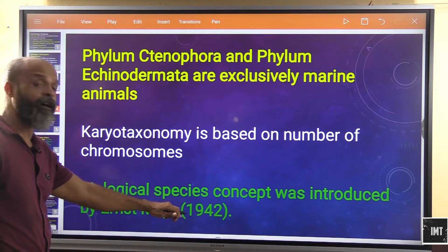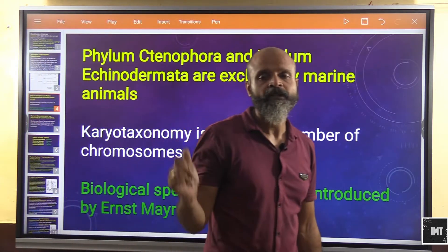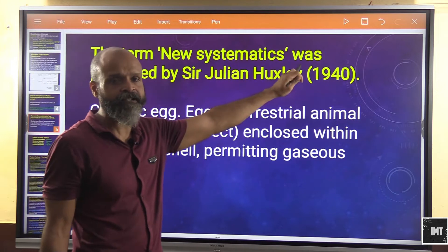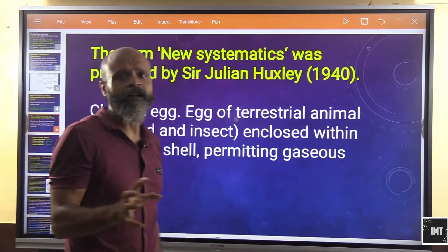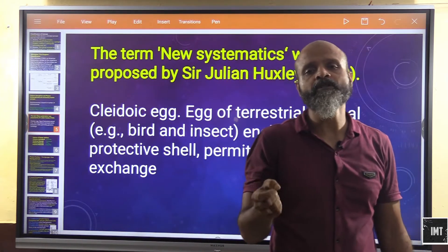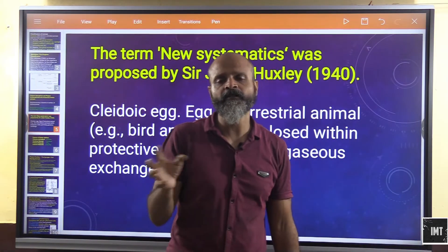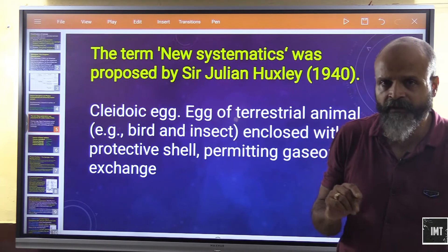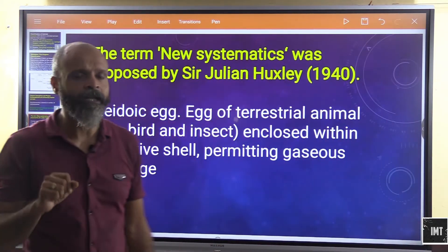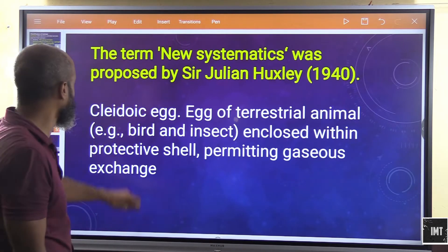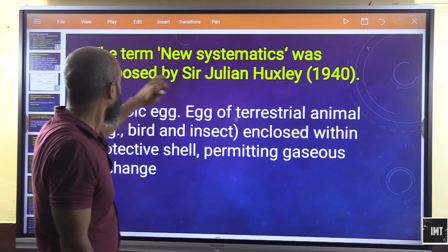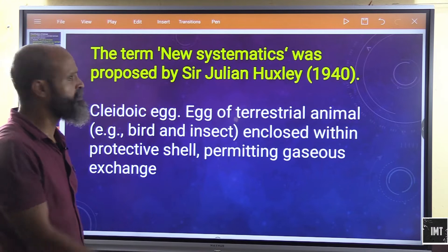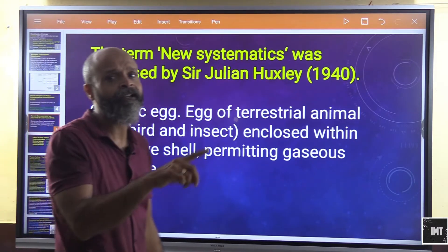The biological species concept was introduced by Ernest Mayr in 1942. Names of scientists, discoverers, and inventors are frequently asked in competitive examinations, so we need to be careful about studying these. The term 'new systematics' was proposed by Sir Julian Huxley in the 1940s.